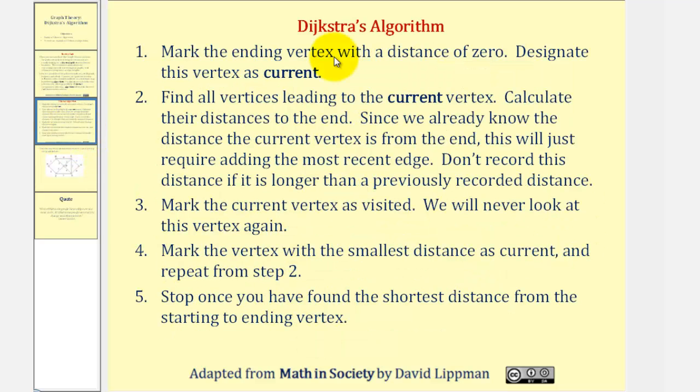Here are the steps we'll follow. Number one, we'll mark the ending vertex with a distance of zero. Designate this vertex as current.